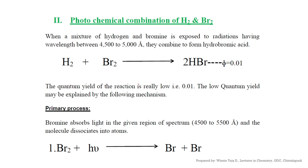Now let us understand the photochemical combination of H₂ and Br₂, or the formation of hydrogen bromide. When a mixture of hydrogen and bromine is exposed to radiation having a wavelength between 4000 to 5000 angstroms, they combine to form hydrobromic acid. The quantum yield of this reaction is very low — that is 0.01. Even though the two reactions, formation of HCl and formation of HBr, look similar, their mechanisms are different.